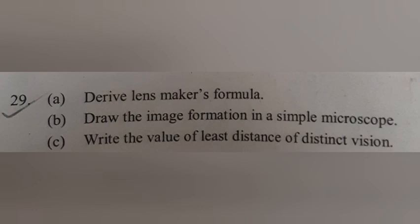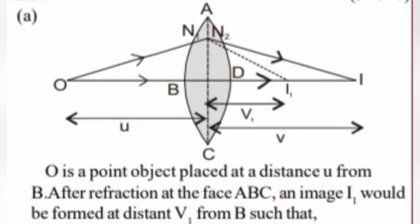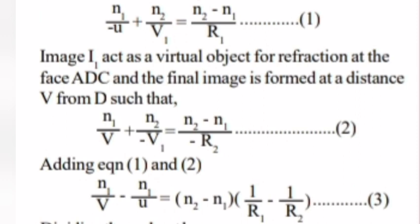Question 29: Derive lens maker's formula. Answer: O is a point object placed at a distance u from B. After refraction at the surface ABC, an image I₁ would be formed at distance v₁ from B such that n₁ by minus u plus n₂ by v₁ equals n₂ minus n₁ by R₁. First equation. Image I₁ acts as a virtual image for refraction at the surface ADC and the final image is formed at distance v from D such that n₁ by v plus n₂ by minus v₁ equals n₂ minus n₁ by minus R₂. Second equation.